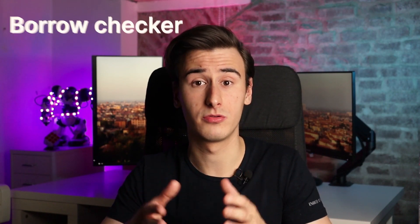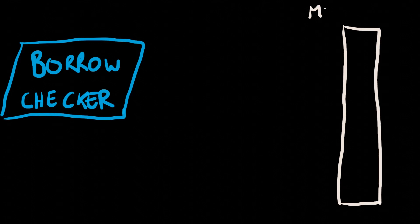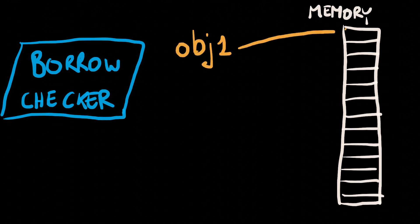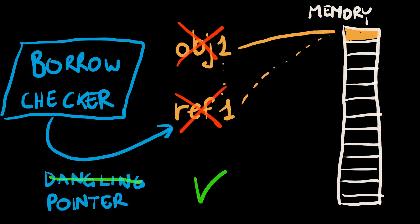Rust takes it a step further and introduces the concept of the Borrow Checker, a component bundled within the compiler itself that makes sure that a reference does not outlive the data it refers to, preventing entire classes of memory and safety bugs.